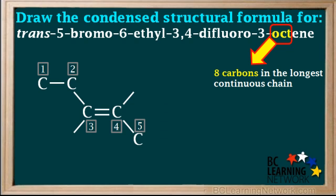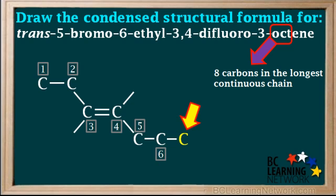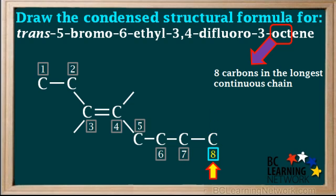Remember, the 'oct' in octene means there are eight carbons in the longest continuous chain. So we have three more carbon atoms to add: carbon number six, carbon number seven, and carbon number eight. Now we have all eight carbon atoms we need for the chain.